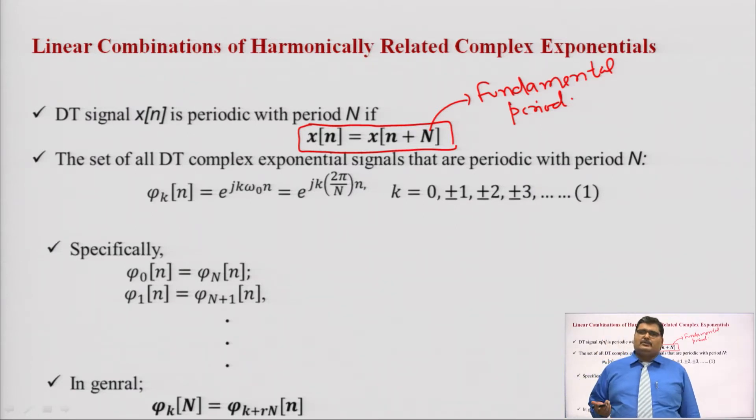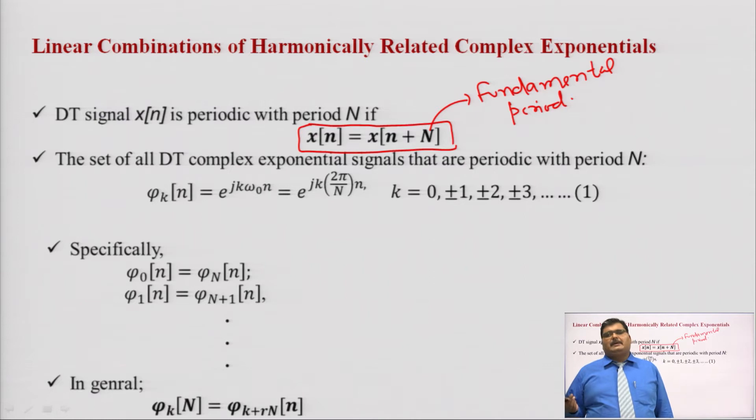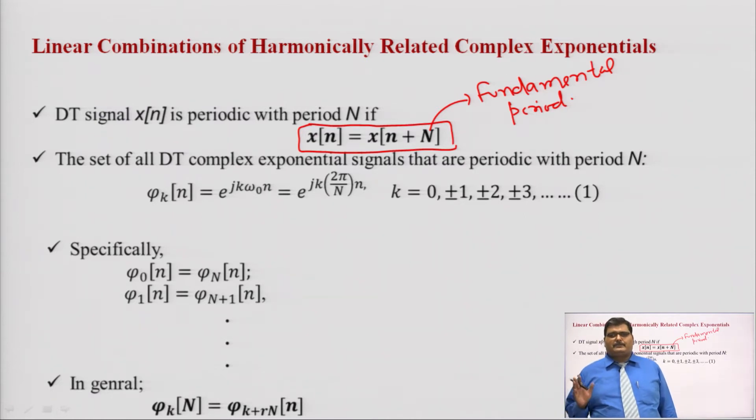Here k takes values 0, 1, 2, 3, 4 and also −1, −2, −3, −4.